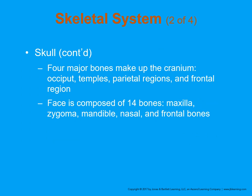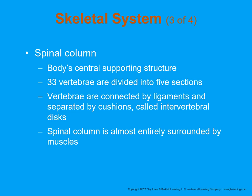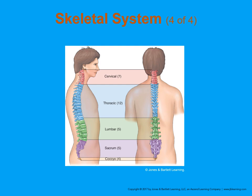There are four major bones that make up the cranium: the occiput, the temples, the parietal regions, and the frontal region. The face is composed of 14 bones, including the maxilla, the zygoma, mandible, nasal bones, and frontal bones. The spine has seven cervical vertebrae, 12 thoracic vertebrae, five lumbar, five sacral, and four coccyx. Note that from the sacrum to the coccyx these are fused.